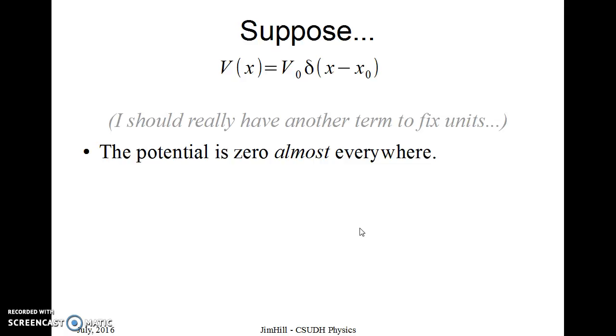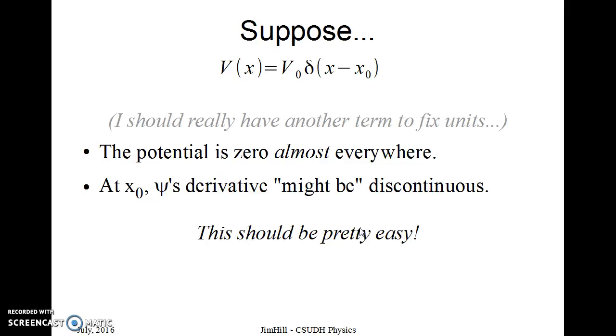The potential, this one, is zero almost everywhere. That is everywhere except at x equals x zero at that point. The wave function's derivative, I put in quotes, might be discontinuous. It is, but I haven't shown you how yet, so I have to put in quotes. This should be easy to deal with. There's only one point that's special and interesting, but I'm going to, in fact, make it one step easier,